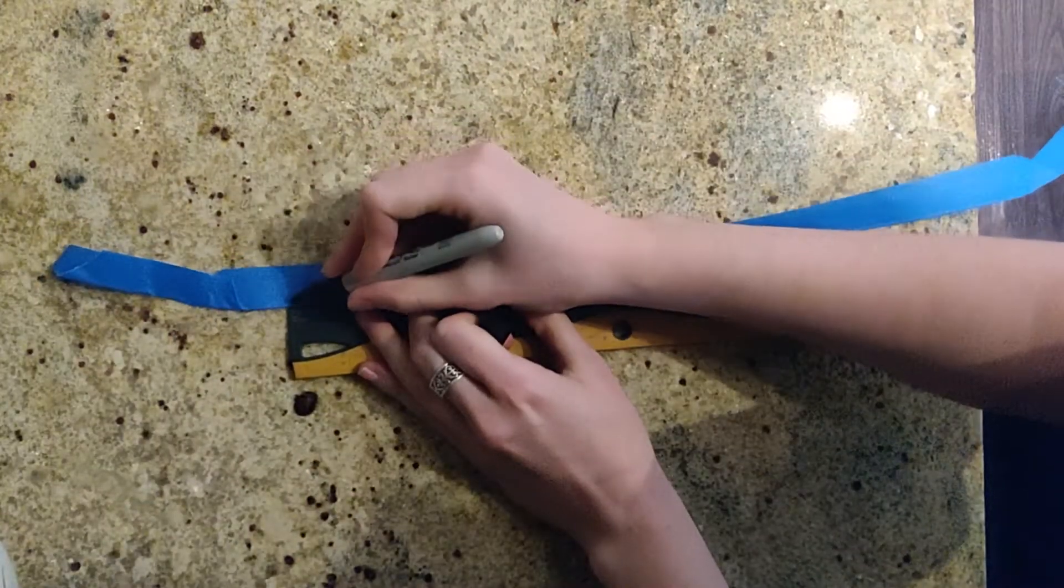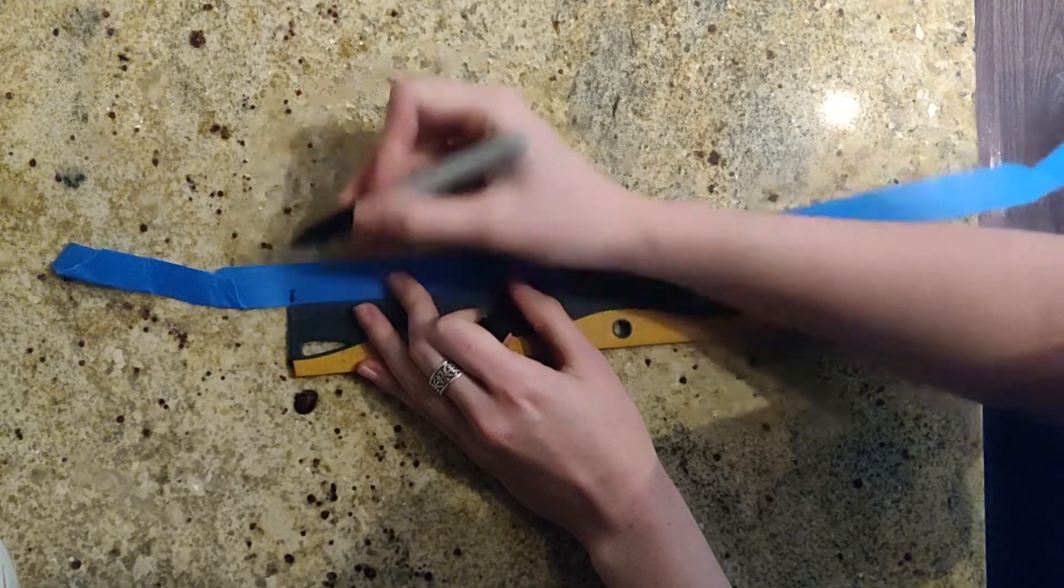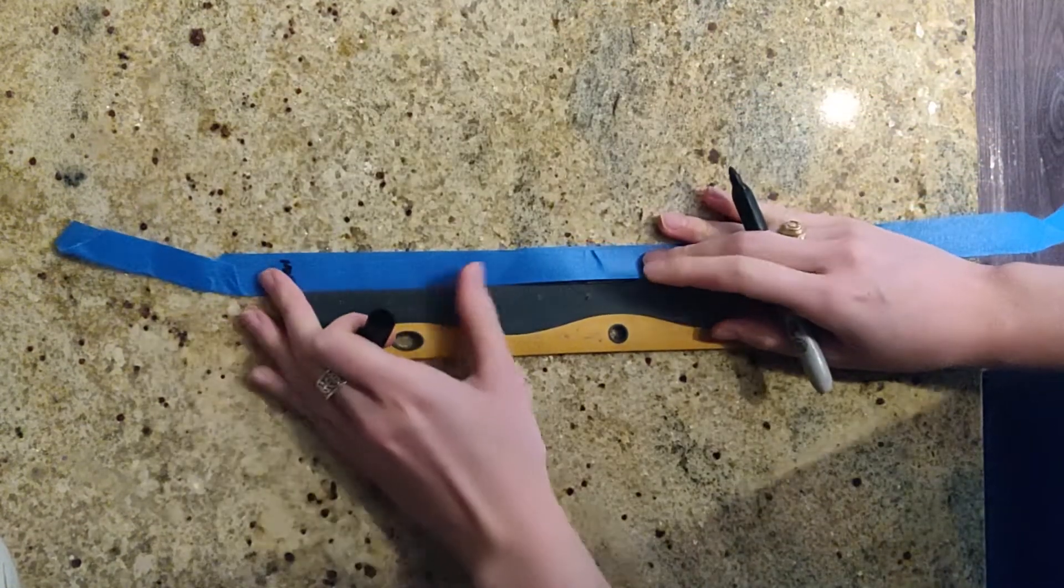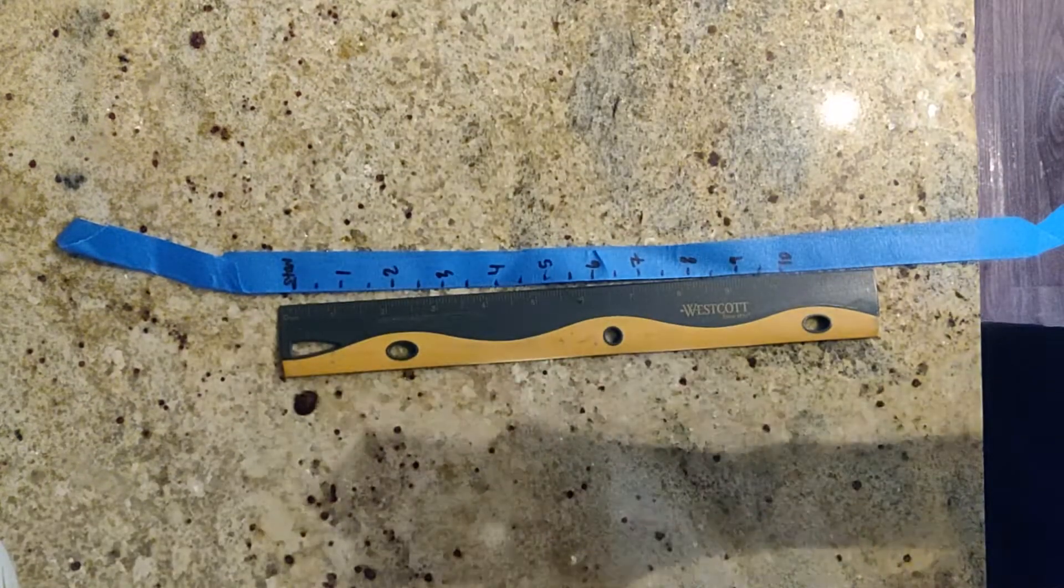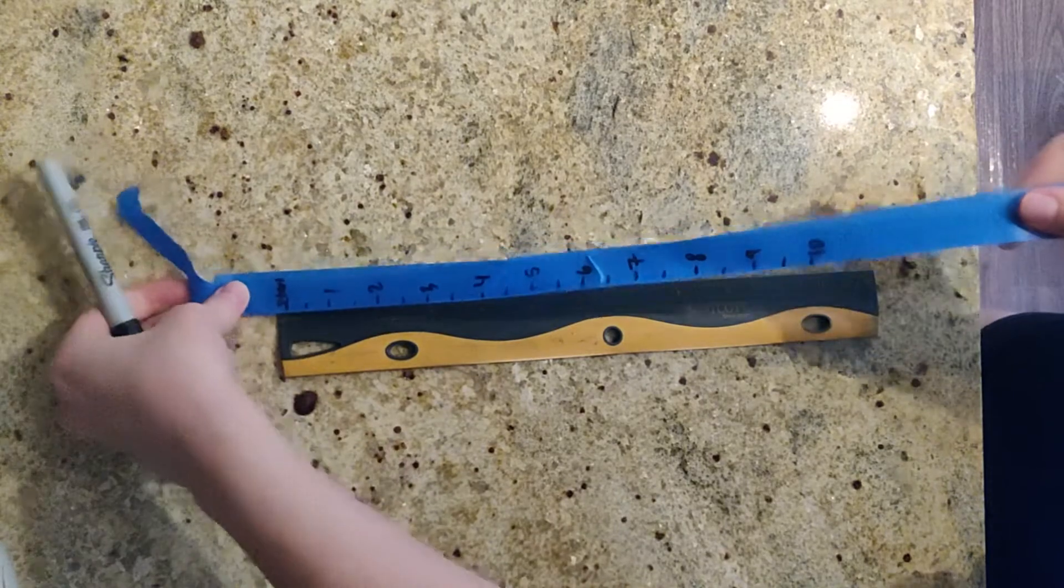I'm going to mark where my start point is at zero inches, and I'm going to use this ruler to mark probably every inch. That's one way of making your own tape measure.